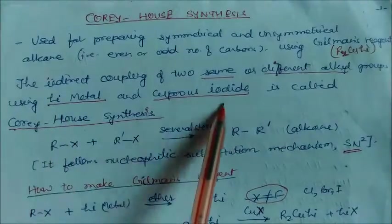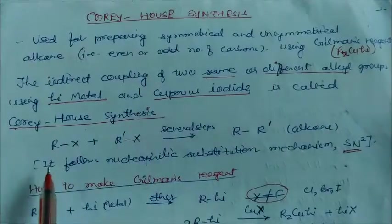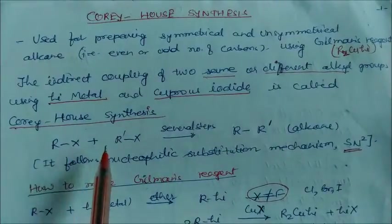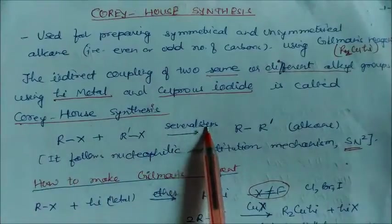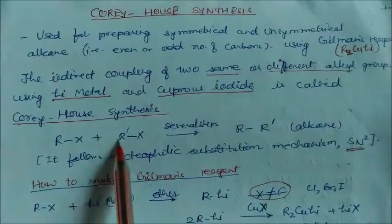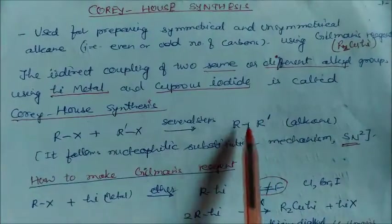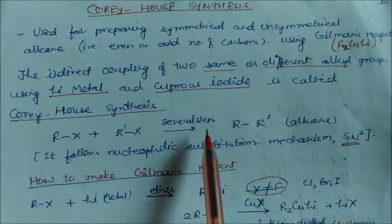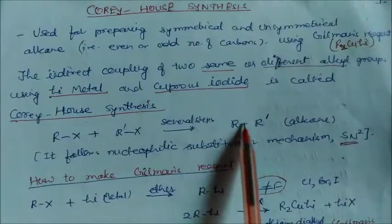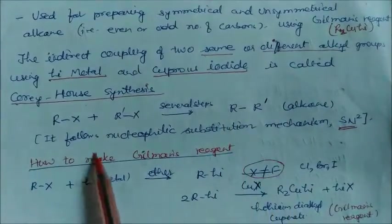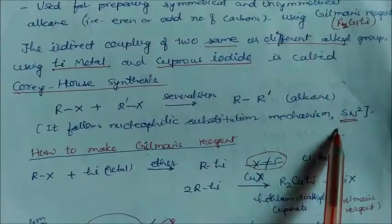Using lithium metals or copper iodide is called Corey-House synthesis. In this reaction, one alkyl halide and another alkyl halide — which can be same or different — combine through several steps so that the two R groups combine to form an alkane. We can get alkanes with an odd or even number of carbons. The reaction follows a nucleophilic substitution mechanism, specifically SN2.